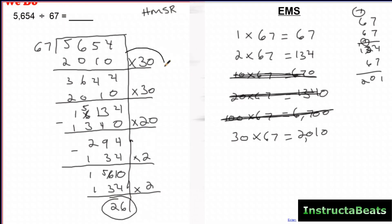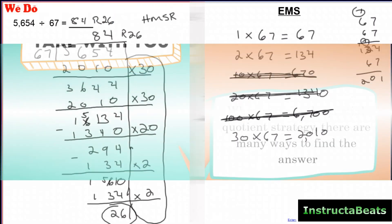26 is less than my divisor, so this is going to be my remainder. I'm done, which means I just need to add up all the numbers on the side. So I have 30 plus 30, which is 60 plus 20, which is 80 plus four, which is 84. So I'm going to put the eight in the tens place, the four in the ones place. And my remainder is going to be 26. So my quotient is 84. And I had a remainder of 26 left over.